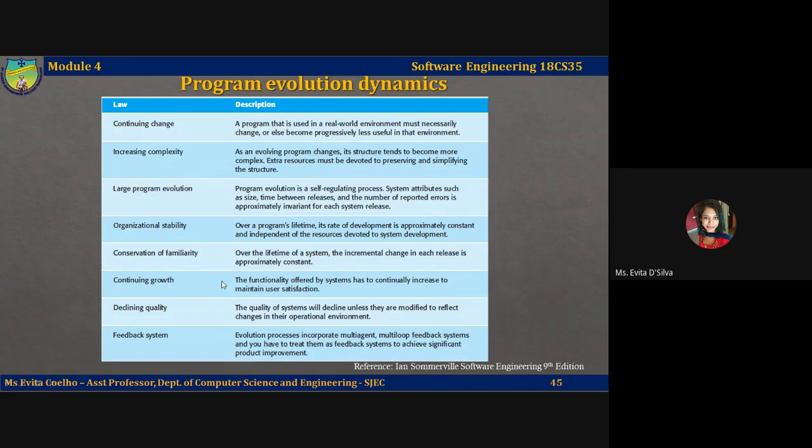The last law, feedback system: evolution processes incorporate multi-agent, multi-loop feedback systems, and you have to treat them as feedback systems to achieve significant product improvement. The sixth and seventh laws are similar and essentially say that users of the software will become increasingly unhappy with it unless it is maintained and new functionality is added to it. The final law reflects the most recent work on feedback processes, although it is not clear how this can be applied in practical software development. Lehmann's observations should be taken into account when planning the maintenance process.